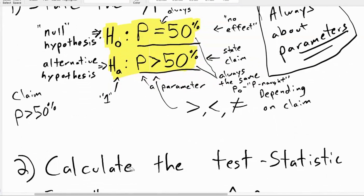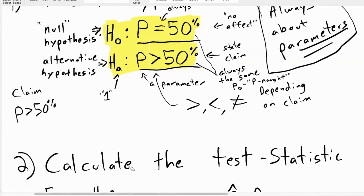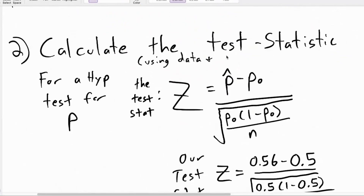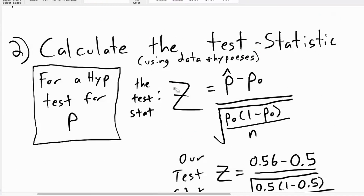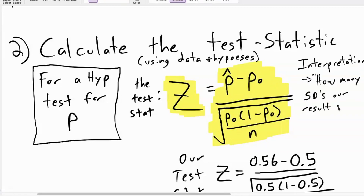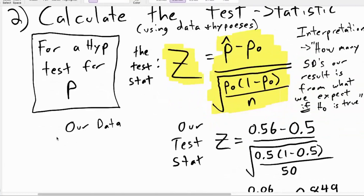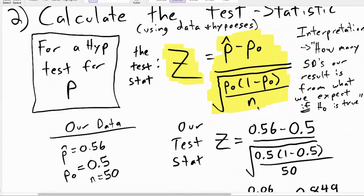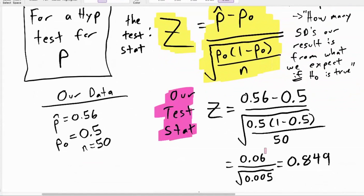Step two is where we start evaluating our claim — getting to what the data tells us. Calculate the test statistic. You calculate the test statistic using the data and the hypotheses. Because we're doing a hypothesis test for a population proportion, the test statistic is a z-score, which means the standard normal distribution will come into effect. The interpretation: it tells you how many standard deviations our result is from what we expect if the null is true. With p-hat of 0.56, p₀ of 0.5, and sample size of 50, we end up with a test statistic of 0.849.